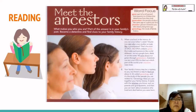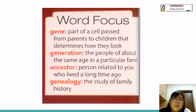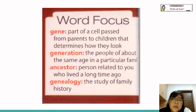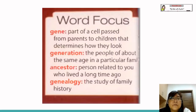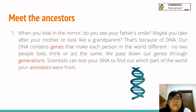For the first lesson we are going to do reading. The title for the text is 'Meet the Ancestors.' First, look at the word focus. We have four words. First is 'gene' — gene is part of a cell passed from parents to children that determines how they look. 'Generation' — these are people of about the same age in a particular family. 'Ancestor' — a person related to you who lived a long time ago. And 'genealogy' — the study of family history.